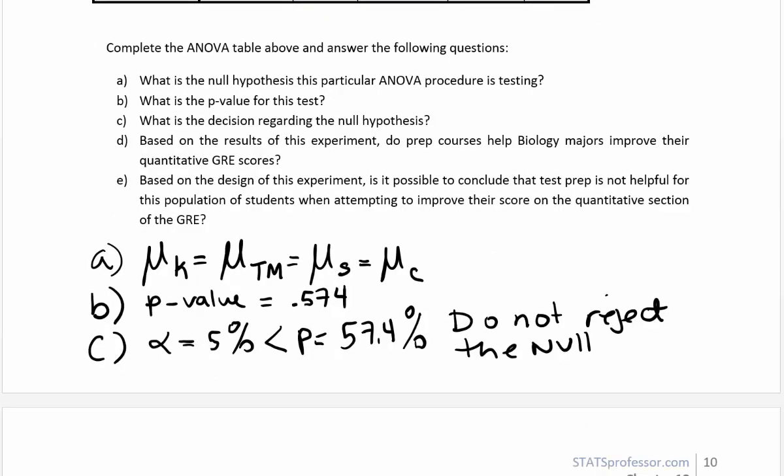In part D, they ask based on the results of this experiment, do prep courses help biology majors improve their quantitative GRE scores. We're not rejecting the null. That idea says that all the prep courses or preparation strategies that we studied are equal to one another, or they produce equal results. The problem is this last one is just the control group, which didn't actually do any test prep. We're basically saying that control group that didn't participate in any specific test prep procedure, they didn't do a self-paced course, they didn't use Kaplan or Testmasters, they just studied on their own, but they did as well as the other three groups that used specific test prep strategies. The answer to D is it does not seem that prep courses help biology majors improve their scores.